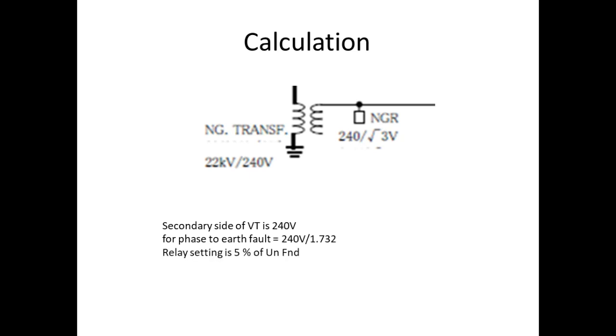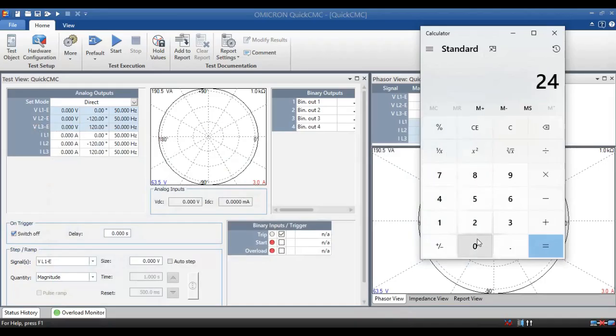For relay testing, we have to inject and check the secondary voltage alone. The secondary voltage is 240 volts. This voltage is achieved if it has only phase to earth fault. Now I am going to simulate phase to earth fault, so I have to divide by 1.732 and multiply by the set percentage.